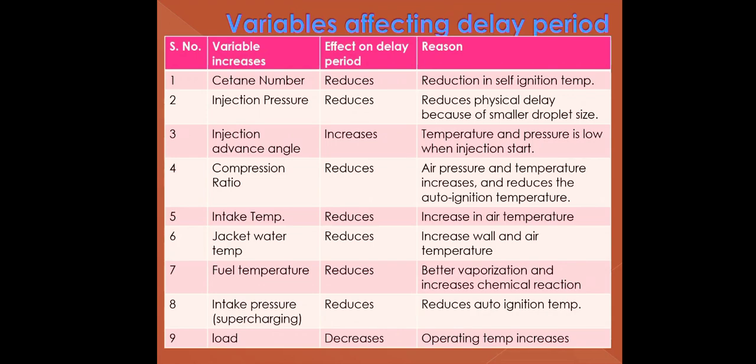Variables affecting the delay period are as follows. If the cetane number increases, the delay period decreases because of the reduction in self-ignition temperature. If injection pressure increases, it reduces the delay period because of a reduction in physical delay due to the smaller size of the droplets.